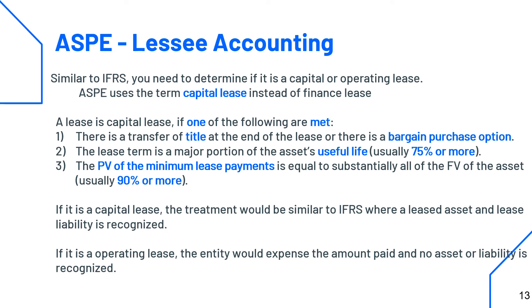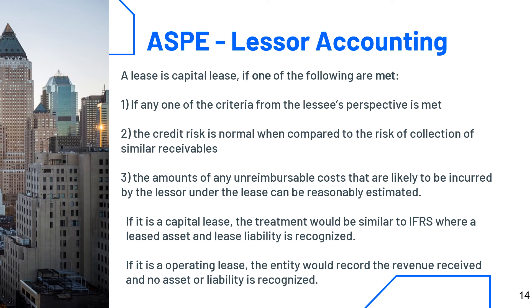If any one of those criteria is met, you will have a capital lease, meaning a lease asset and lease liability must be recognized — similar to IFRS. If it becomes an operating lease, the entity will just expense the amount paid and no asset or liability is recognized. For lessor accounting under ASPE, the criteria include: one of the lessee criteria is met, the credit risk is normal compared to similar receivables, and the amount of any unreimbursed costs likely to be incurred by the lessor can be reasonably estimated.